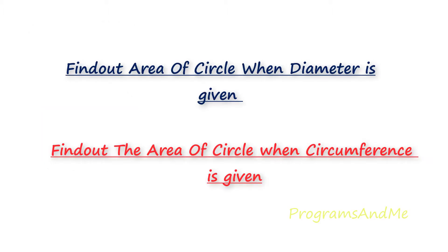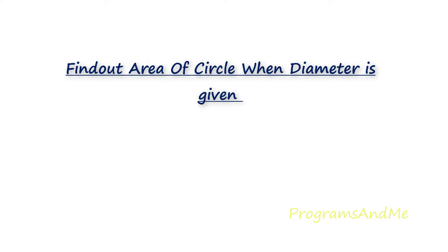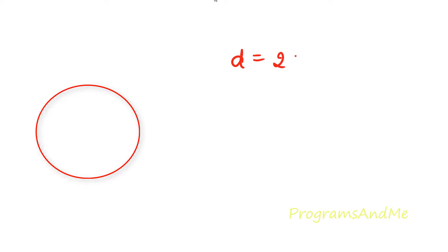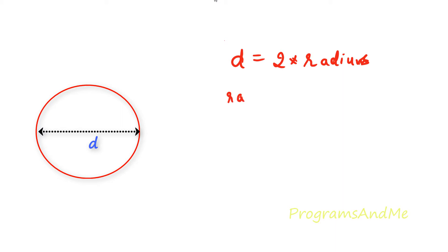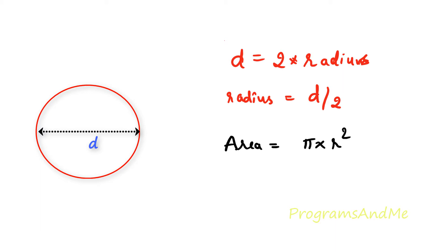So how to find out the area of a circle when diameter is given, and also how to find out the area of a circle when circumference is given. First let's see how to find out the area of circle when diameter is given. Diameter is nothing but 2 into radius. So when diameter is given, first we need to find out the radius. We know the area formula: area is equal to pi r squared.